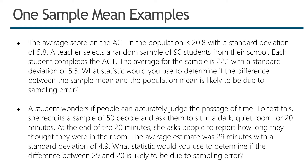In the next example, a student wonders if people can accurately judge the passage of time. She recruits 50 people and asks them to sit in a dark quiet room for 20 minutes, then report how long they thought they were in the room. The average estimate was 29 minutes with a standard deviation of 4.9. We have one sample mean being compared to a known value of theoretical interest — 20 minutes — and only a sample standard deviation, so we use the single sample T.